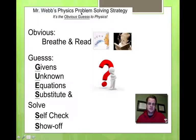It's called the Obvious Guess to Physics. Basically, that's because there are two obvious things that you need to do, and we can do the rest of the steps with GUESS. There's an extra S, but anyway.